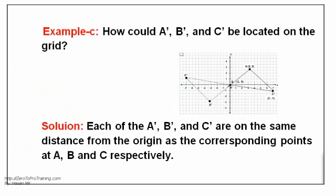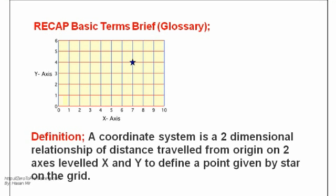Example B: Reading coordinates of A' is (-3, -3), B' is (0, 0) and C' is (-7, 1). A coordinate system is a two-dimensional relationship of distance traveled from origin on two axes leveled X and Y to define a point given by star on the grid.